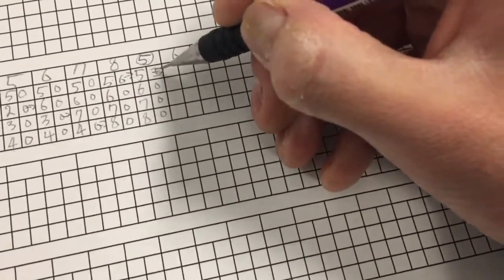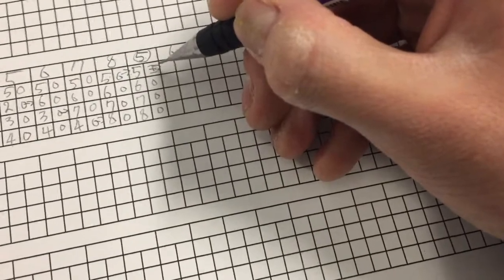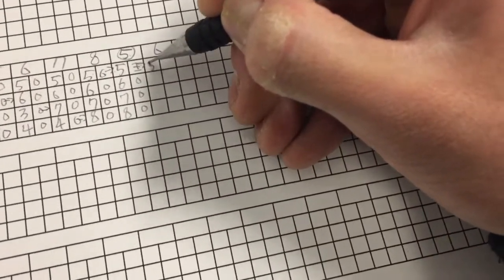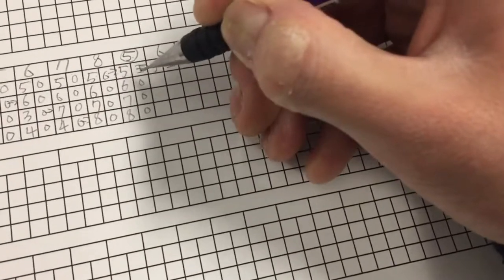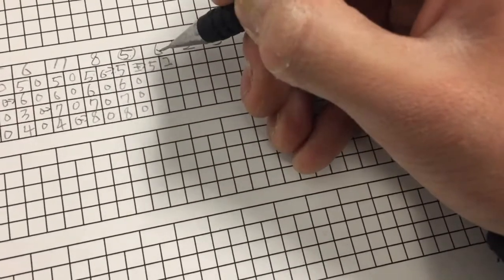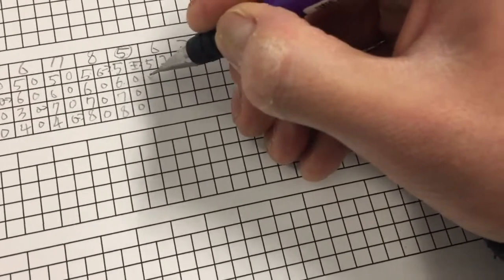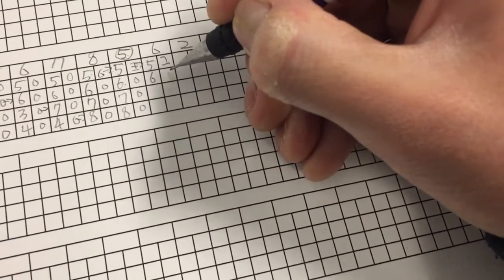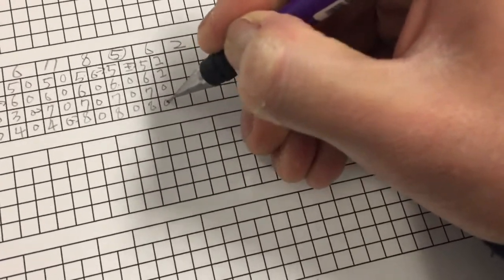So since the pointer is here, we check from here to here. So 5, 1 was here. And then if you see, like 6 was here. So you change the 6 reference bit to 1. And then 7, 0, 8, 0.